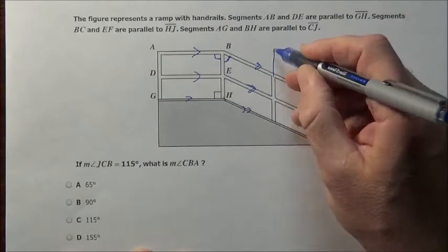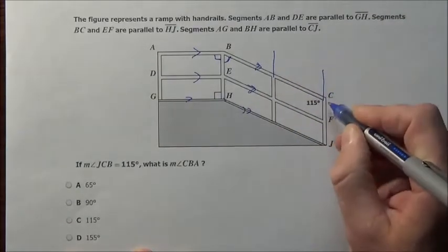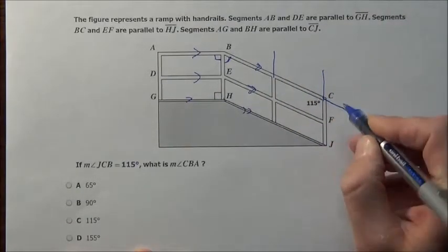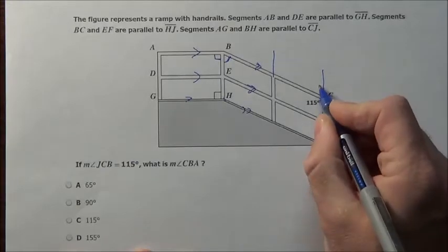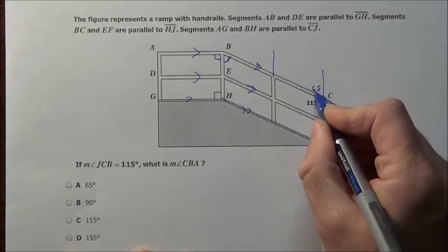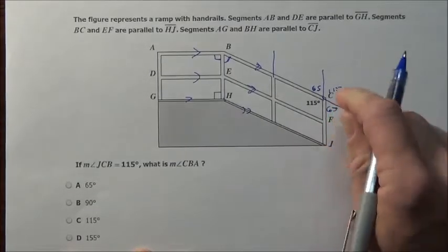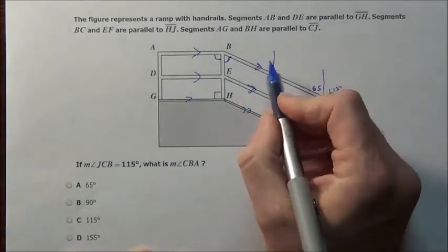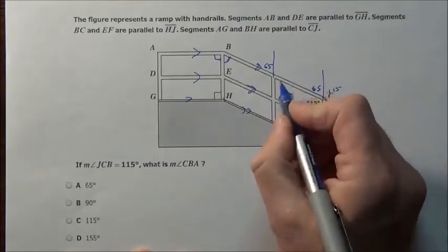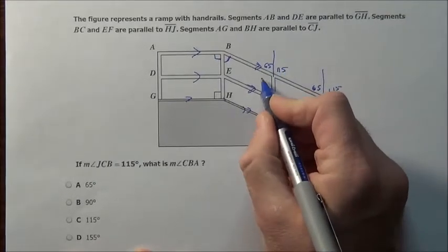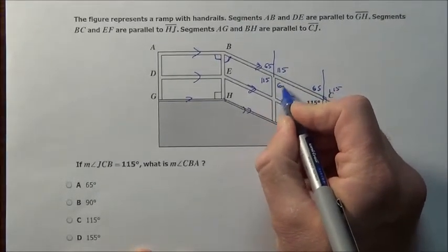we can extend these lines, and if that's 115°, then I know this is 65° right here. 115° over here, 65° right here. I could pick these up and move them here: 65°, 115°, 115°, 65°.